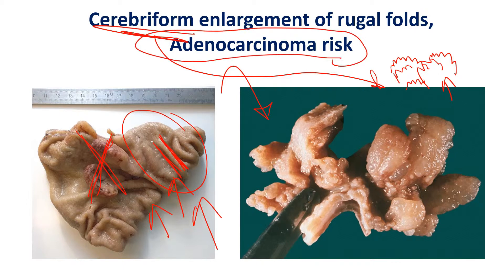That's important because compared to another similar hyperplastic gastroenteropathy — Zollinger-Ellison syndrome — you do not have much of an adenocarcinoma risk, whereas Ménétrier's disease does carry that risk in the stomach.